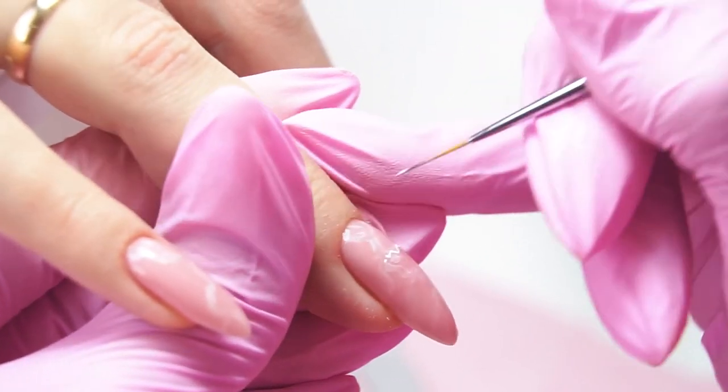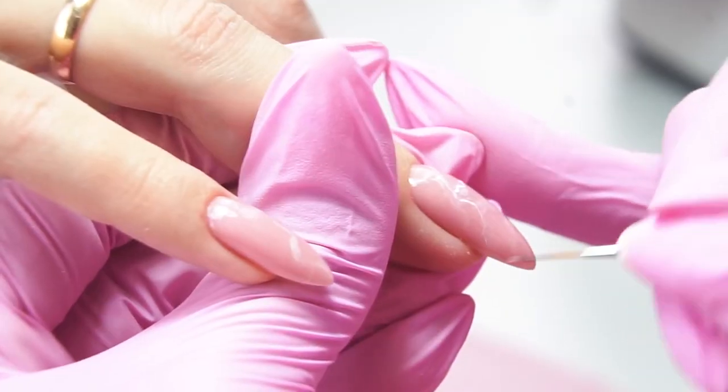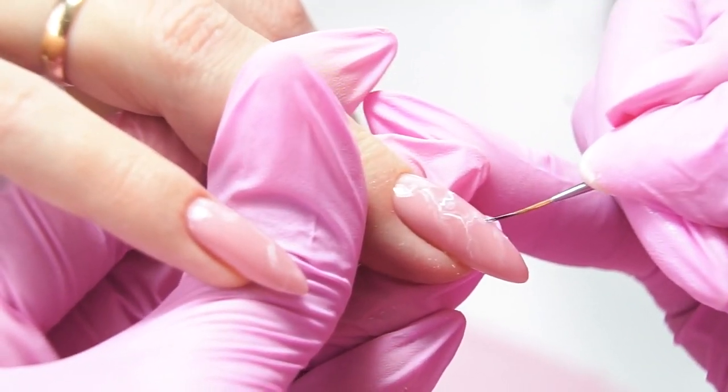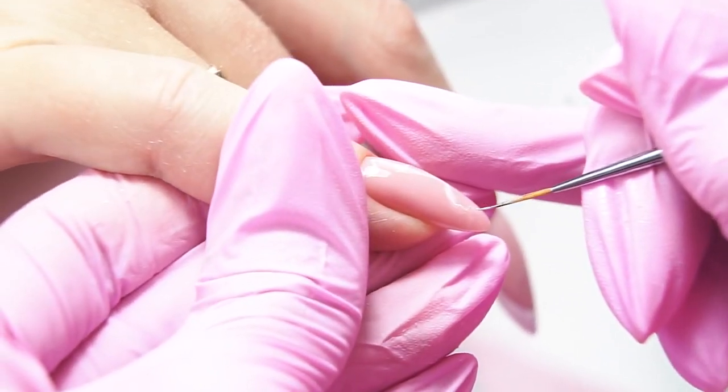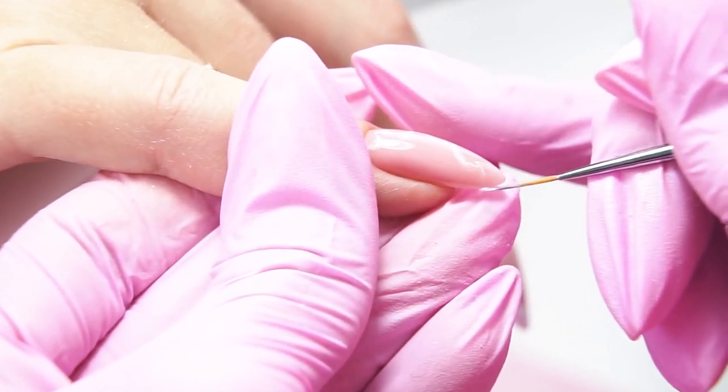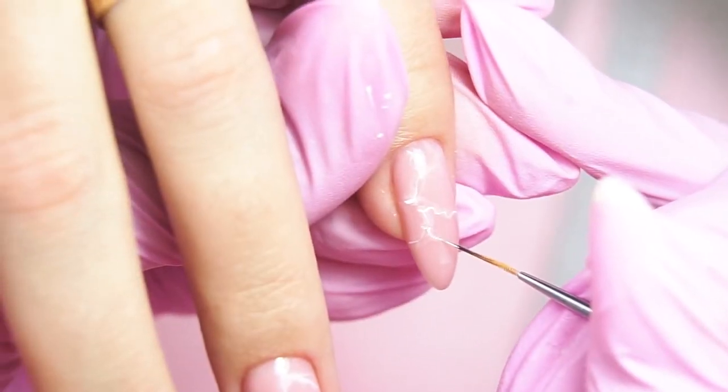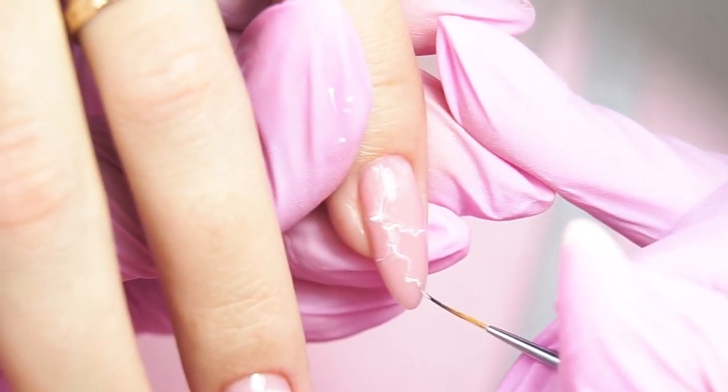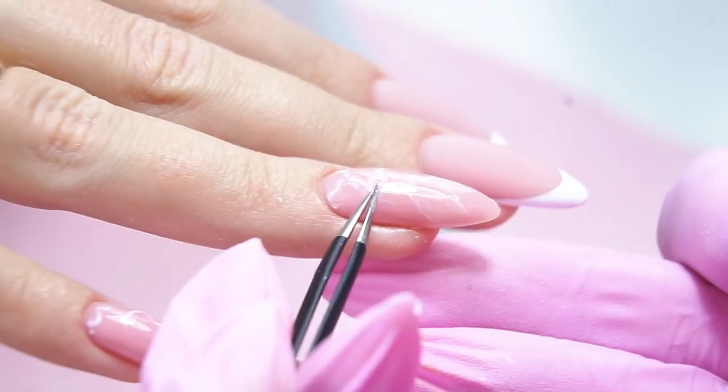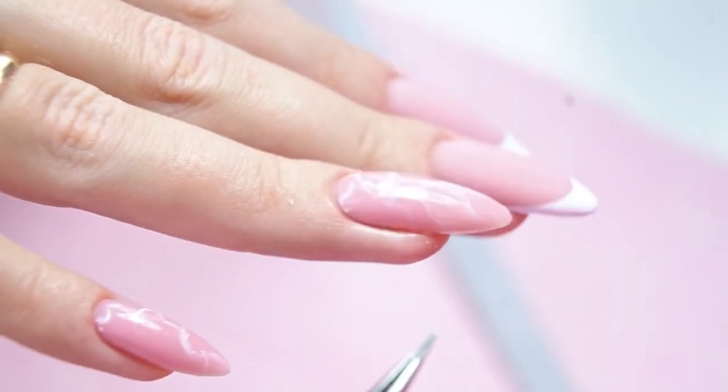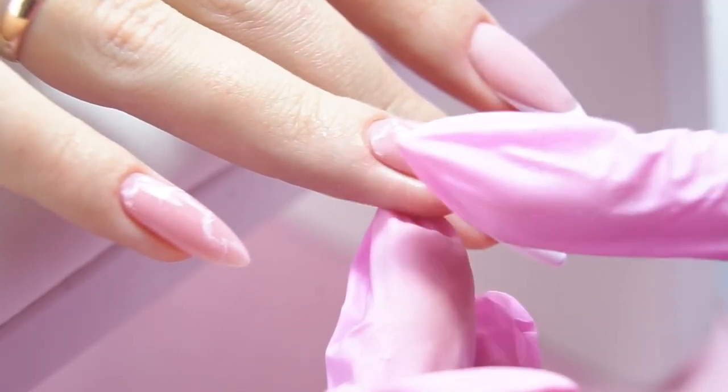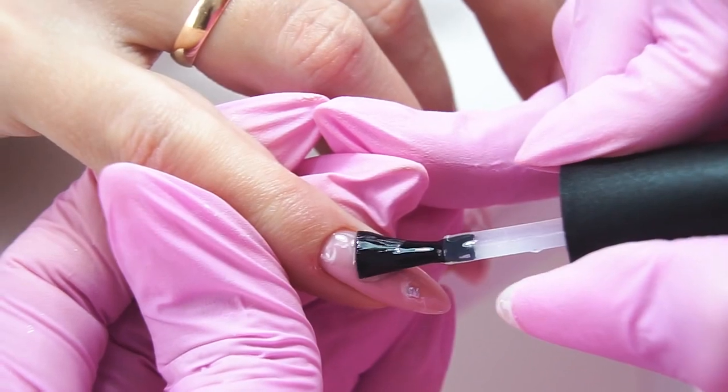After curing, we add some more white gel polish with thin, delicate lines. For the decor, we will add some small pieces of silver leaf foil, and cover them up with a non-tacky top coat.